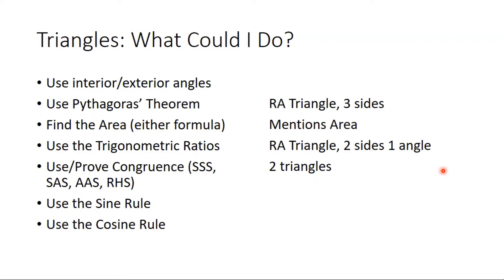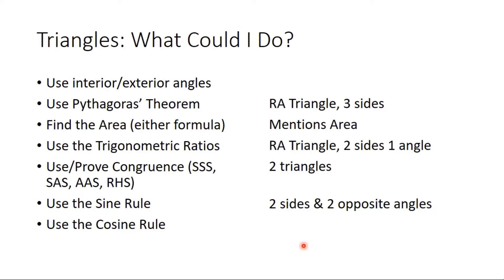If I'm expecting congruence, I need there to be more than one triangle because I need to be comparing two triangles to see if they are congruent. For the sine rule, I'm going to see two sides and their opposite angles — the capital letters matching the angles and the little letters on the sides, looking for those two pairs. And finally, if I'm going to use the cosine rule, I'm expecting to see three sides and one angle.